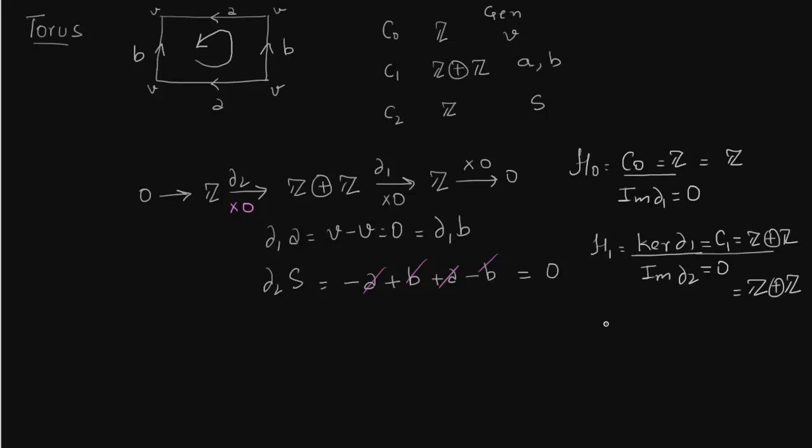So what about H_2? It is kernel of delta two over image of delta three. Now image of delta three is zero, precisely because there are no cells of three and higher dimension. What is kernel of delta two? Everything which is in C_2 gets mapped to zero because it's just multiplication by zero map. So since there are no cells of three and higher dimension, all other homology groups are zero in higher dimensions.